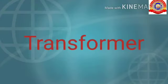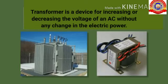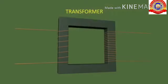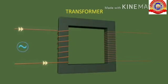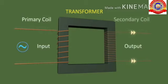The next topic is the transformer. A transformer is a device that works on the principle of mutual induction. It is a device for increasing or decreasing the voltage of an AC supply without any change in the electric power. A transformer consists of two coils — primary and secondary — wound around a soft iron core. AC current is given through the primary coil as the input, and due to the magnetic flux change, the secondary coil produces an induced EMF as the output.